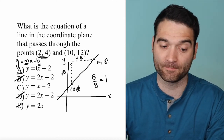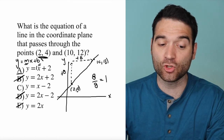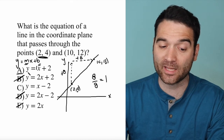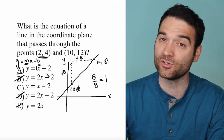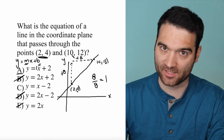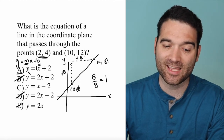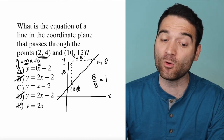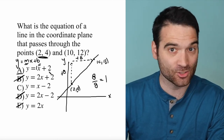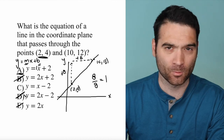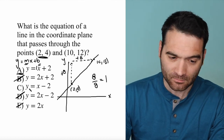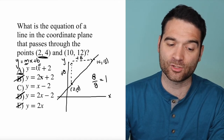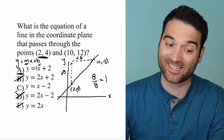Plugging in 2 for x and 4 for y into answer option A: is 4 equal to 1 times 2 plus 2? Yes, it is. Now the second point: is 12 equal to 10 plus 2? It also is. Both points work for A, which suggests it is the correct answer. Double-checking C: is 4 equal to 2 minus 2? No, it's not. That's game over.